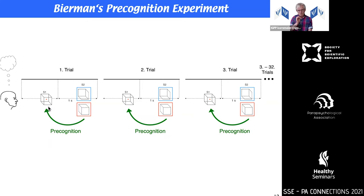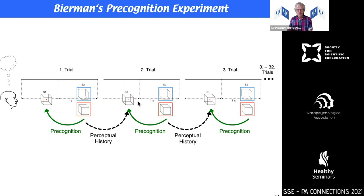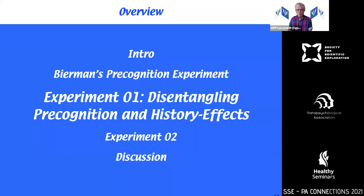One of the problems with these studies is that since there were so many trials in succession, it could also have been the case that not the future, but the history — namely the previous disambiguated cubes — had an influence on the perceptual duration of the Necker cube. This was not controlled in Biermann's study.